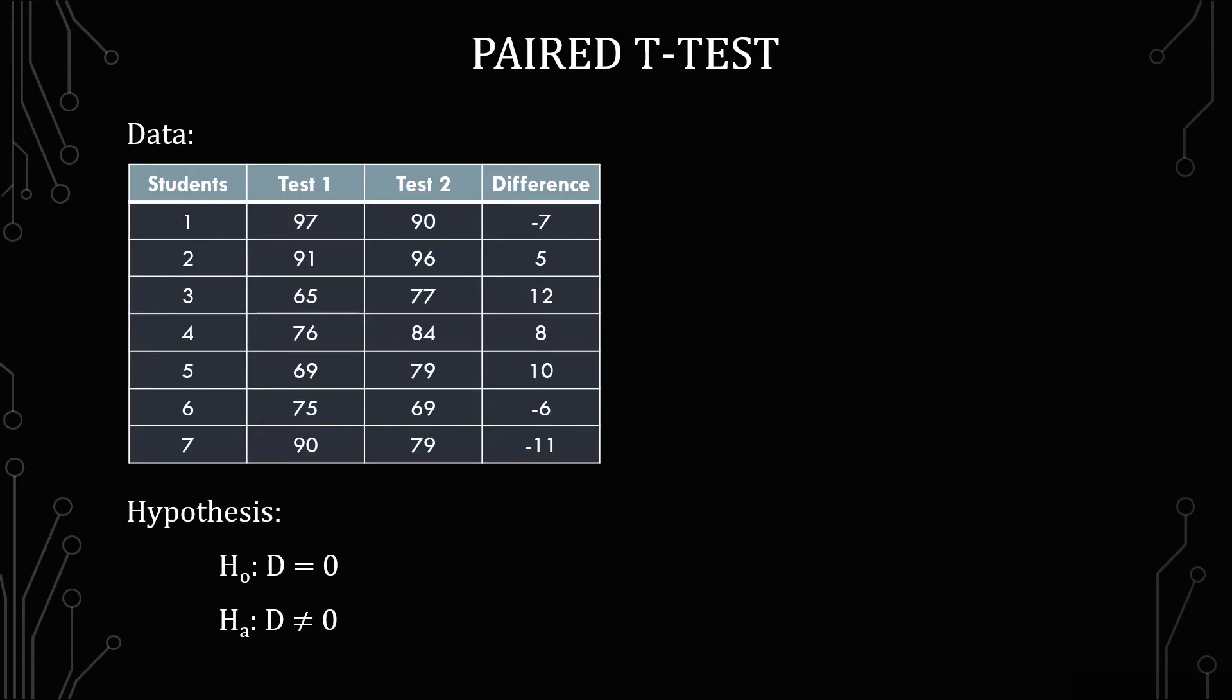Notice that for each student there are two inputs and then you have the calculated difference that you do. The null hypothesis is that there is no difference. The alternative hypothesis is that the difference is not zero, so whether it's positive or negative. From that we know that this is a two-sided test.